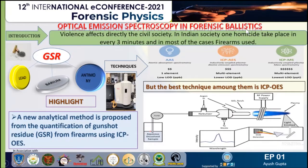Introduction. Violence affects directly the civil society. In Indian society, one homicide takes place in every three minutes and in most of the cases, a firearm is used. So the main goal of the forensic scientist is to relate the suspect to the murder weapon and most often to the ammunition.